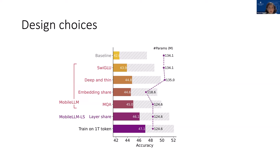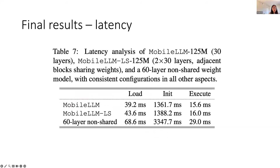Another question: have you deployed your models on real devices, which platform did you use, and what is the measured latency? Yes — this was measured on an iPhone 13 Pro with iOS 17. We measured both loading time, initialization time, and execution time. The mobile LLM 125M model executes at approximately 15 milliseconds per token, which is around 60 tokens per second.